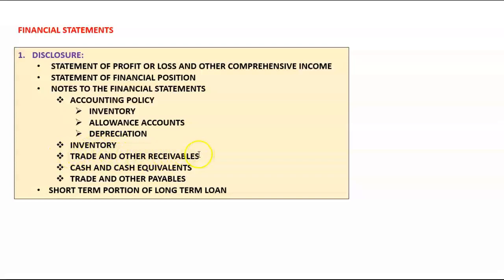For trade and other receivables, start with your gross debtors control account balance, less allowance for settlement discount, less allowance for credit losses, to arrive at net trade debtors. Then add items such as prepaid expenses, reclaimable deposits, accrued income, and the VAT control account if it has a debit balance. On the face of the statement of financial position, under current assets, you will have only one line item for inventory and one for trade and other receivables, each with a reference to the relevant note.